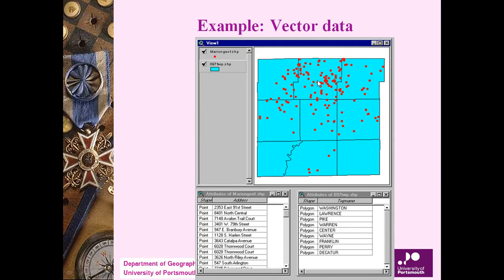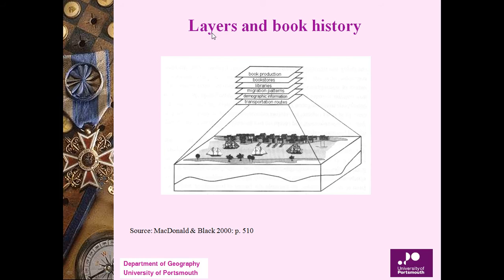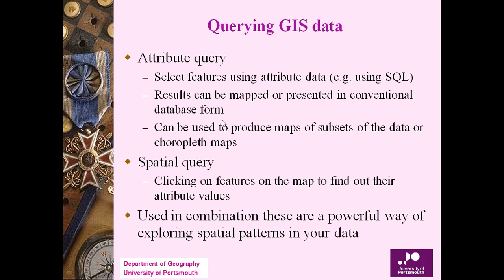Vector data includes point data with shapes and attribute values attached, and polygons — for example, red markers as points and area polygons, each with a name. All vector features have associated attribute information. Layers can be stacked: transportation routes, demographic information, migration patterns, libraries, bookstores, book production — you can make a thematic map based on any of these themes.